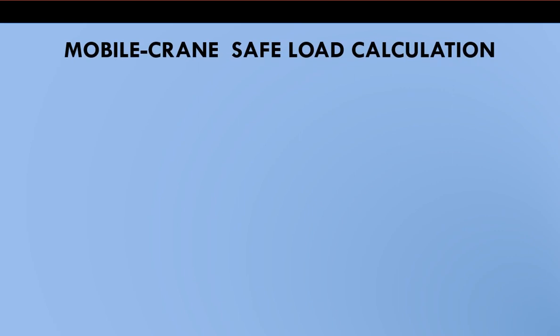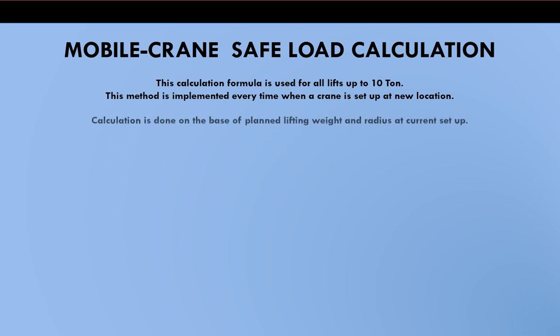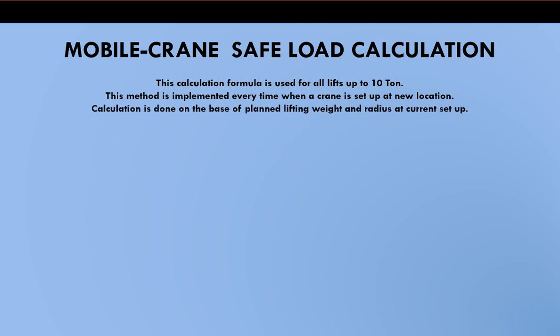Mobile crane safe working load calculation. This formula is used for all lifts up to 10 tons. This method is implemented every time when a crane is set up at a new location. Calculation is done on the basis of planned lifting weight and radius at current setup.